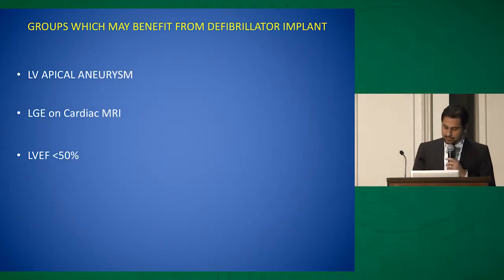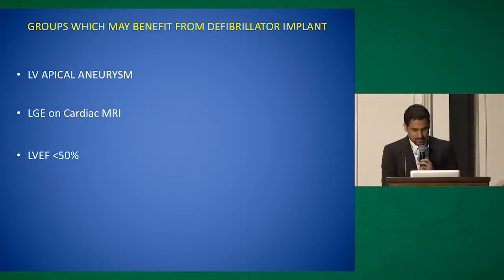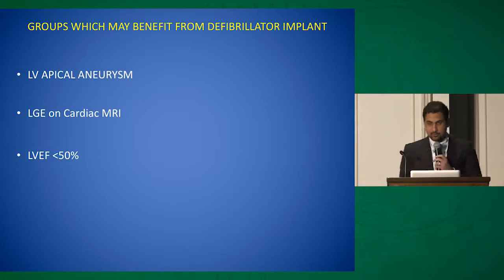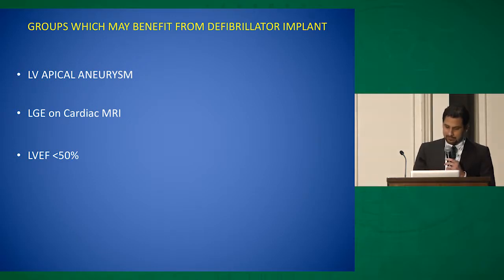So which groups are we missing and how can we improve? Three key areas are: LV apical aneurysm — a very important group; gadolinium enhancement on cardiac MRI; and patients with mildly depressed ejection fraction.